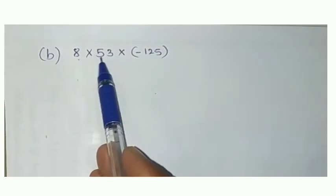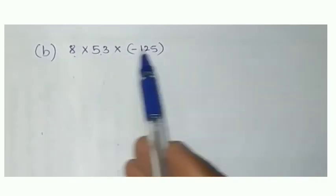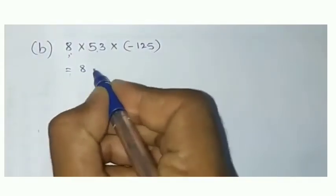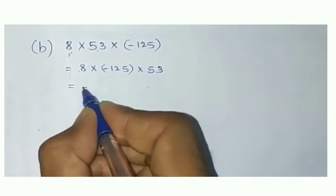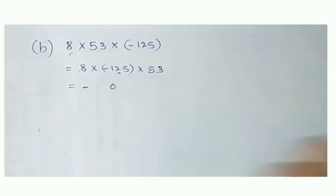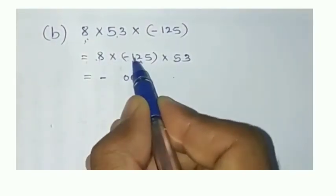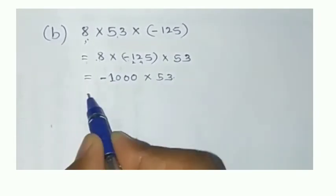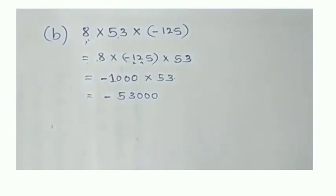In question (b): 8 into 53 into minus 125. Use commutative property — take the easy multiplication first: 8 into 125. 8 into 125 is 1000 — sign is minus, so minus 1000. Then minus 1000 into 53 — minus into plus is minus — gives minus 53,000. Do the other problems as practice.